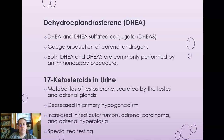The 17-ketosteroids in urine are metabolites of testosterone secreted by the testes and adrenal glands. They would be decreased in primary hypogonadism and increased in testicular tumors, adrenal carcinomas, and adrenal hyperplasia. It is a specialized test but can be done.